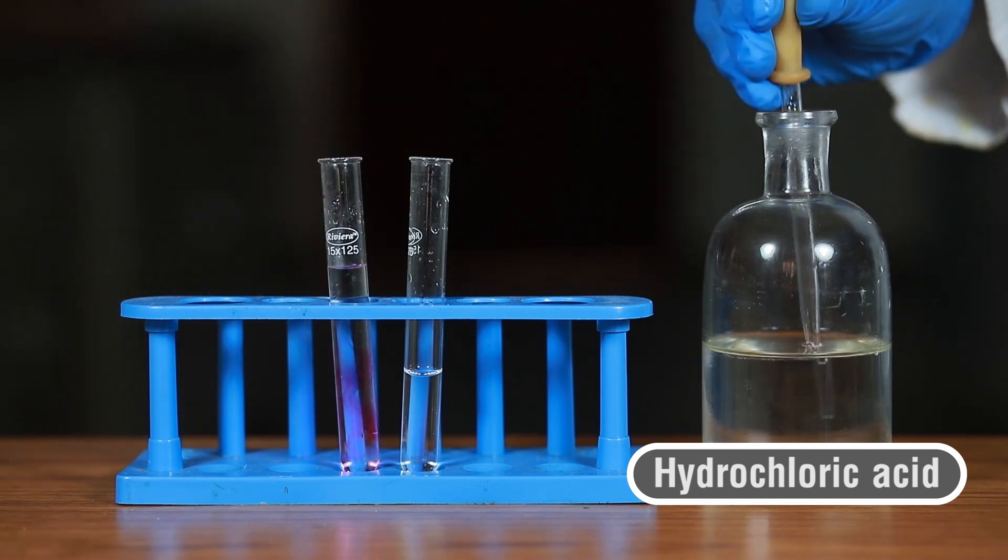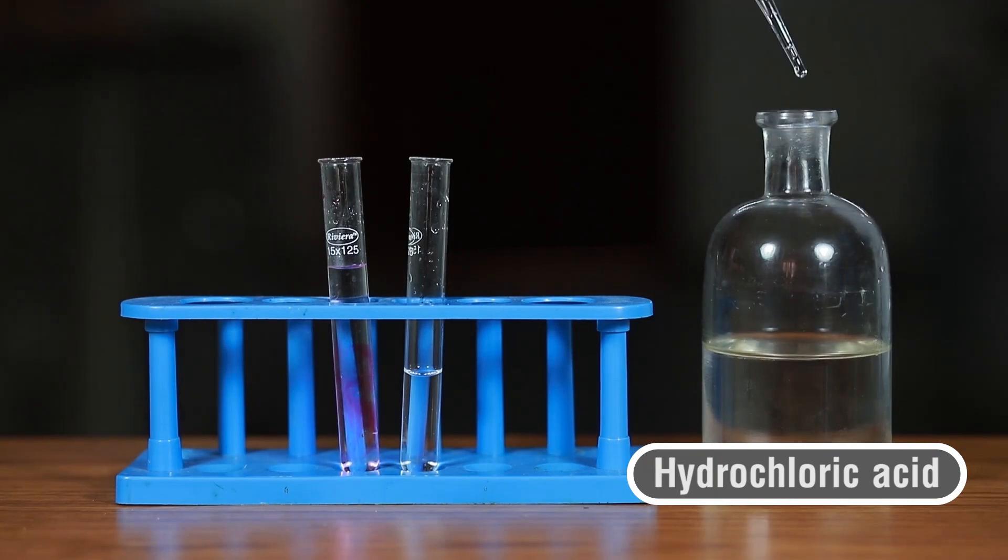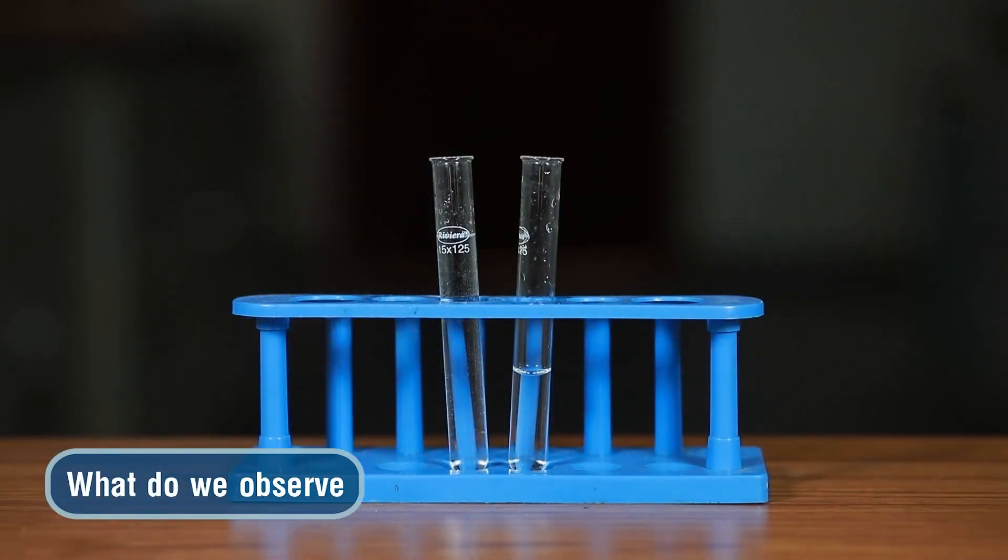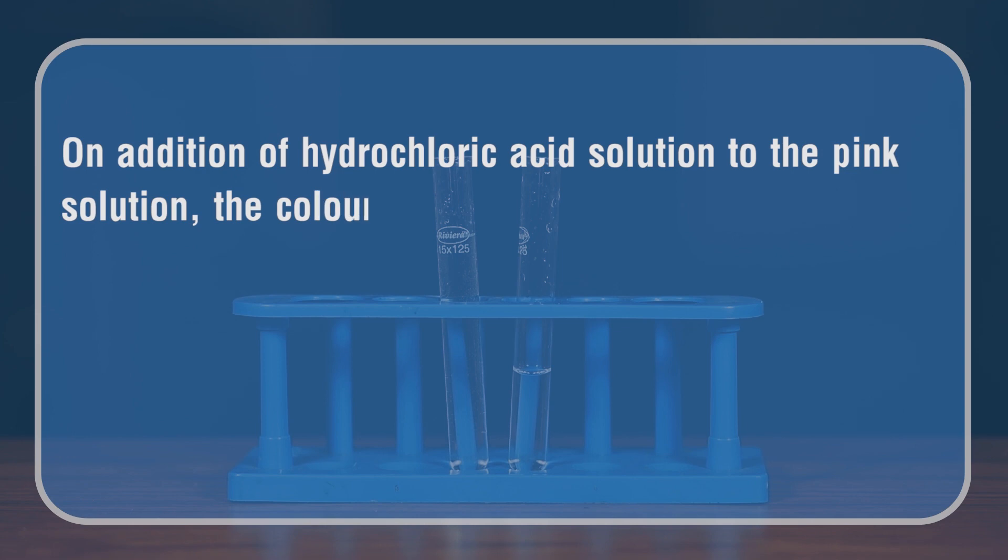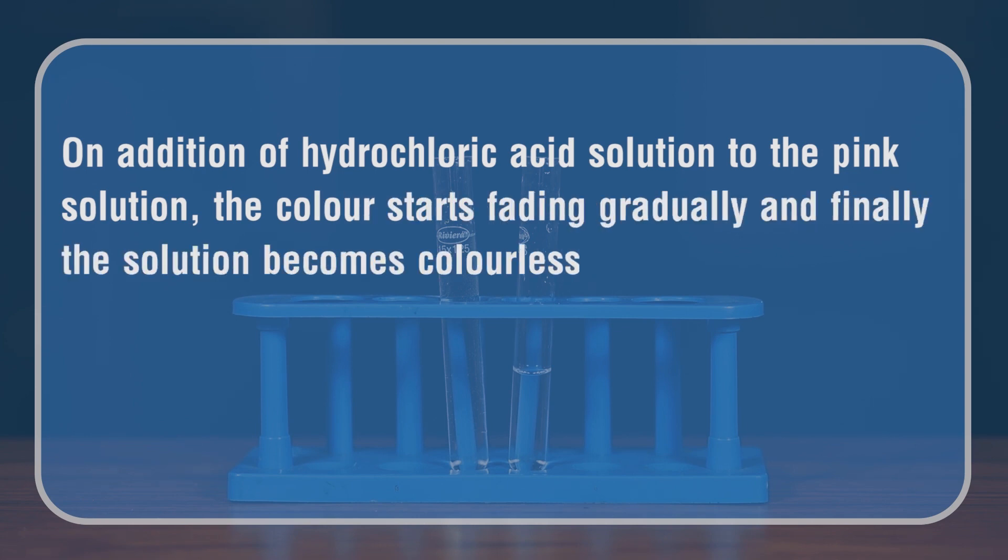With the help of another dropper, take out hydrochloric acid and start adding it drop-wise into the colored solution obtained above. What do we observe? On addition of hydrochloric acid solution to the pink solution, the color starts fading gradually and finally the solution becomes colorless.